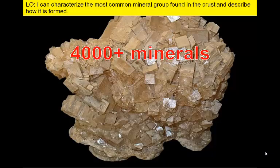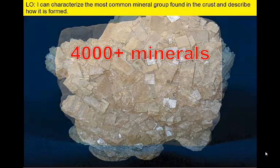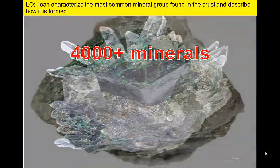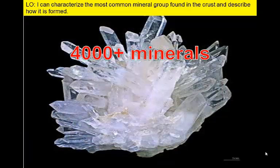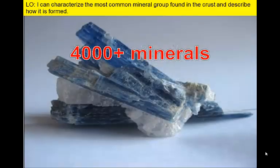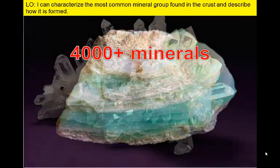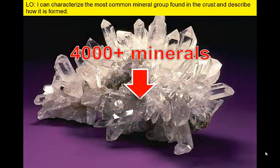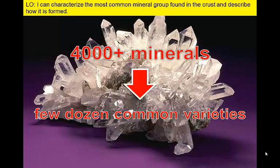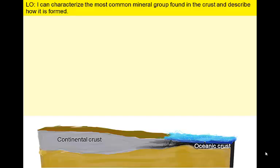Scientists have discovered over 4,000 different minerals, and more are found each year. However, only a few dozen minerals are relatively abundant in the Earth. We live on the planet's surface, so we are most interested in the rocks below our feet that we can use for resources and that break down to form our soils.